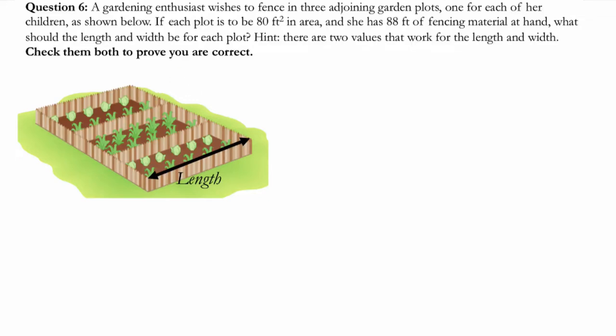All right, so we've got a scary-looking word problem here, but we can solve it together. We can get through this. So let's start by reading it. We know that a garden enthusiast wishes to fence in... Okay, so I'm going to underline garden enthusiast with green, because it's green, garden, it works for me.